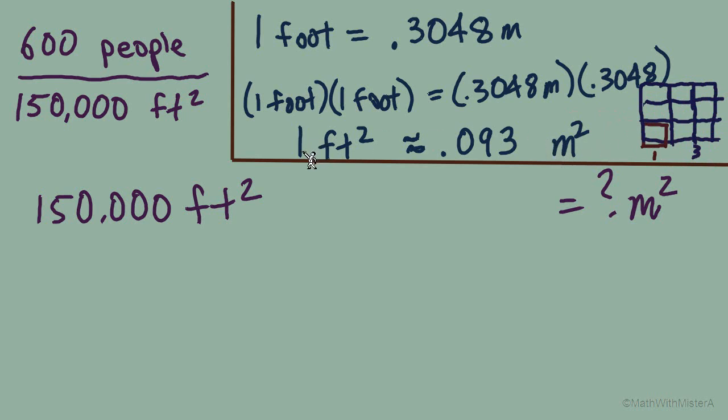Now that we've figured out 1 square foot equals 0.093 square meters, we can go to this 150,000 square feet and say each one is 0.093 square meters. And this multiplication will give us our area in square meters. So we have an approximate result of 13,950 square meters.